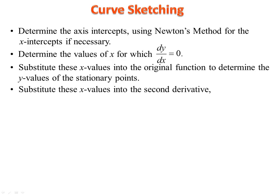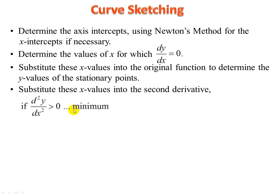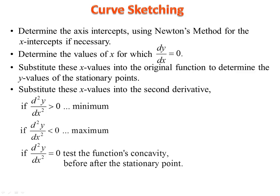Substitute those x-values of the stationary point into the original equation to find the y-values of the stationary point. Differentiate the derivative to get a second derivative. Substitute the x-values into the second derivative — if it's positive, that means a local minimum; negative means a local maximum. If the second derivative is zero, that is inconclusive. You'll have to draw up a table and test the concavity before and after that particular x-value. This will come up in an example just now.